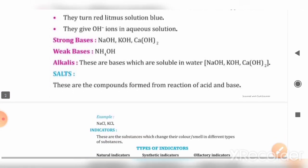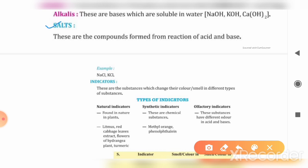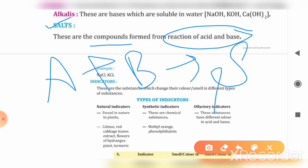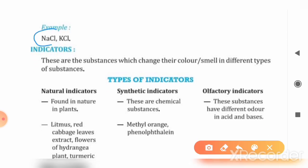The chapter name is Acids, Bases and Salts. Acids and bases we have covered. If we talk about salts, a salt is a compound formed when an acid reacts with a base. Some examples: sodium chloride (NaCl) is our most common salt, and potassium chloride (KCl) is also a salt.